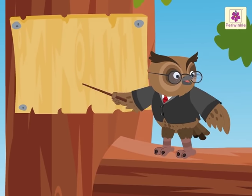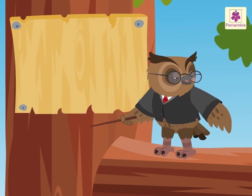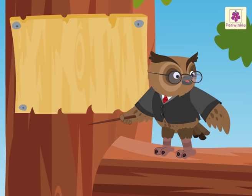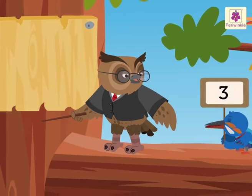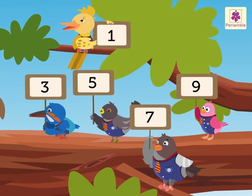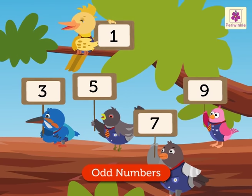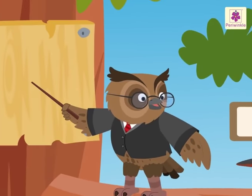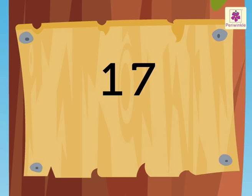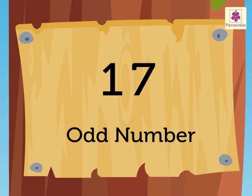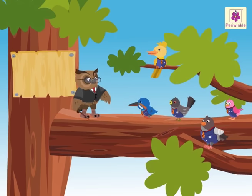Now, let us understand the meaning of odd numbers. All numbers with the digits 1, 3, 5, 7, or 9 in the ones place are called odd numbers. Look at the number 17. Number 17 has 7 in the ones place, so it is an odd number.